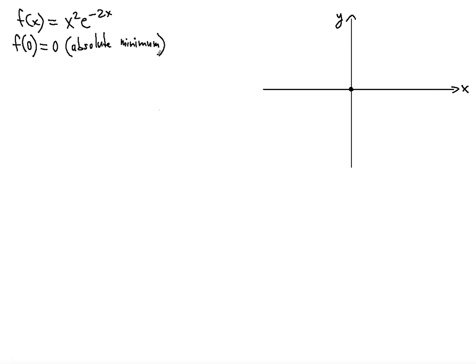Not just the local minimum, but the absolute minimum — meaning it will never be less than this. So when x equals 0, the function value is 0. I drew this point here — that's the origin. Now let's check this by actually taking the derivative using the product rule.